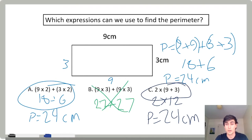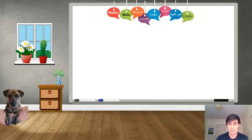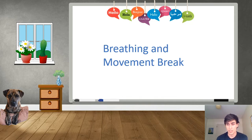Maybe you found other strategies that work for finding the perimeter. If you do, that is awesome — keep looking for them. We've already found some strategies for determining the perimeter of rectangles. Let's take a quick break. In my class, we like to do breathing and movement breaks. One of our breathing exercises is called a mountain breath.